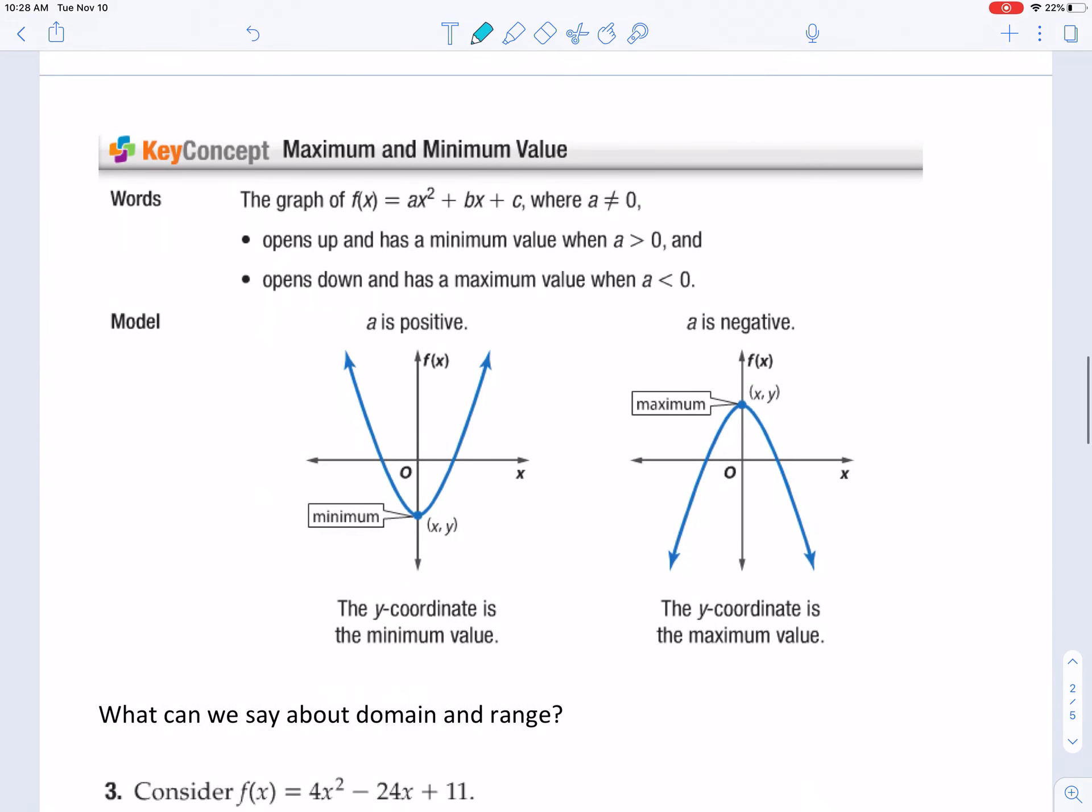Another thing I want you to know is minimum and maximum values. If it opens up, I mean, it goes up forever. And if it opens down, it goes down forever. But each of these have a value that it either can't go lower than or higher than. And those are going to be our minimum or maximums. You might notice those happen at exactly the vertex.